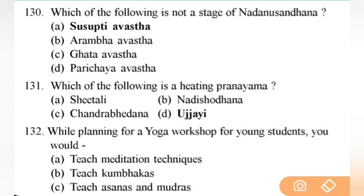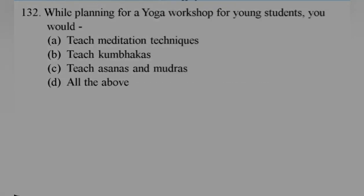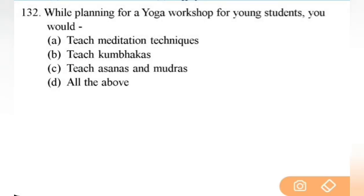Which of the following is not a stage of Nadanusandhana? Right answer is A — all other stages are Arambhavastha, Ghatavastha, Parichayavastha. Next: which of the following is a heating pranayama? Right answer is D — Ujjayi. Next: while planning a yoga workshop for young students, you would — right answer — teach all of the above: meditation techniques, Kumbhaka, asanas, mudras, and pranayama.